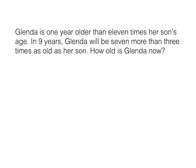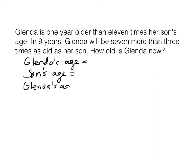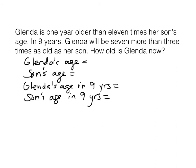Our four unknowns are: Glenda's age now, the son's age now, Glenda's age in nine years, and the son's age in nine years. The smallest is the son's age, so we'll make him X. Now how old is Glenda compared to her son? She is one year older than 11 times his age of X, so she is 11X plus 1.